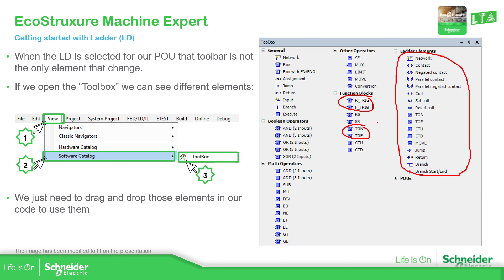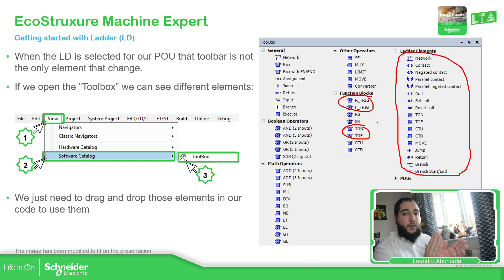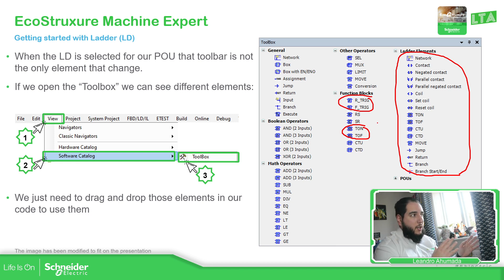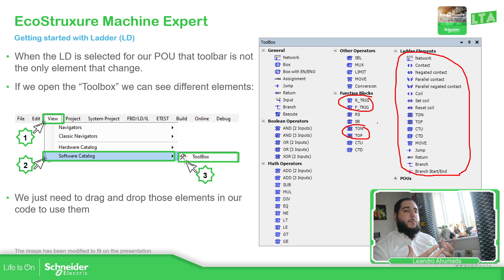I didn't want to go into details, but you have the coils with the option to detect the edge with contacts, and then you have the possibility to add a function block so you can detect the complete edge. But I'm going to cover that later. The idea now is to give you an overview of where to find these different elements of the software.